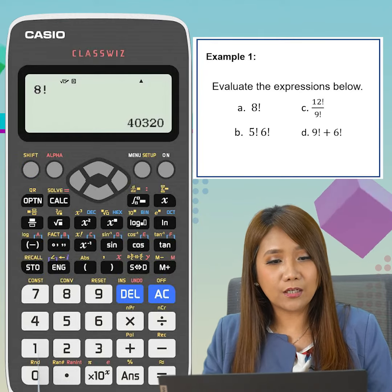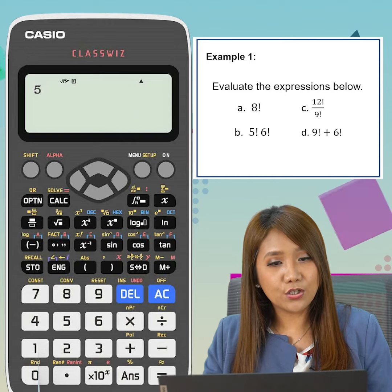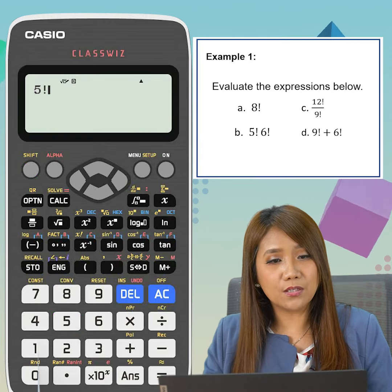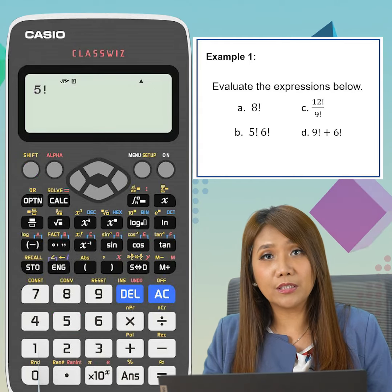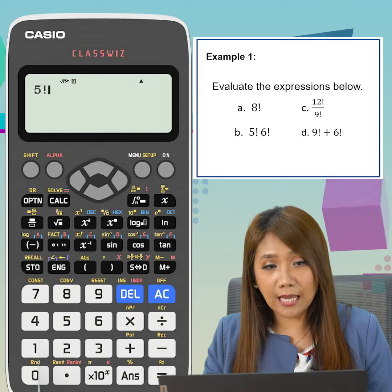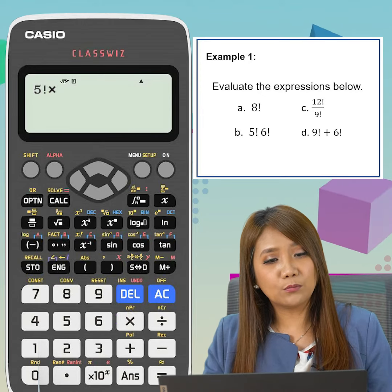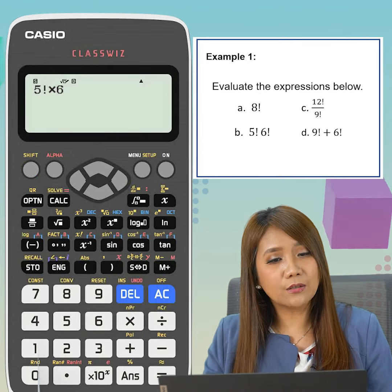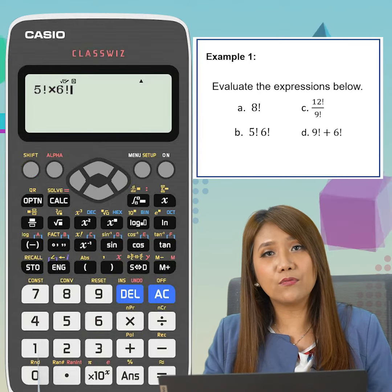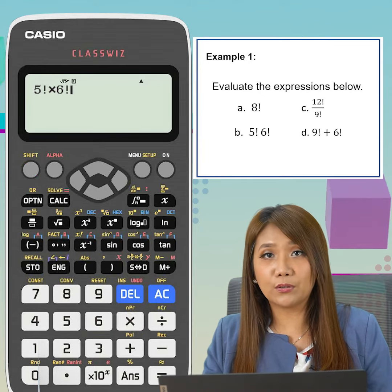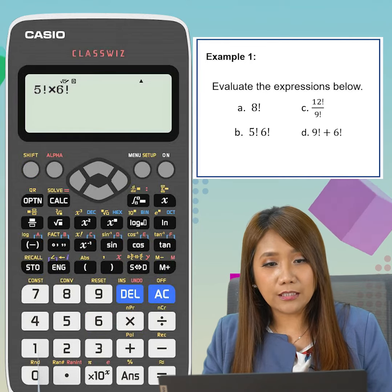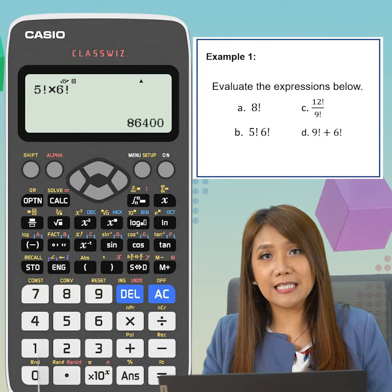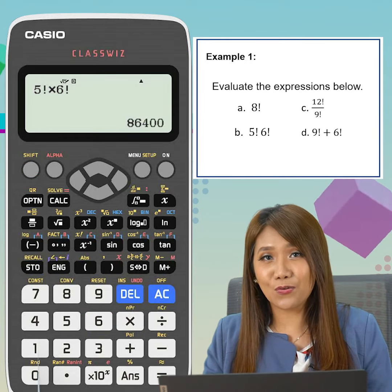Now, for B, we click on 5, shift x raised to negative 1 so that factorial will appear. Then we click on times, followed by 6, shift x raised to negative 1 so that factorial will appear. We click on equal sign and the answer is 86,400.